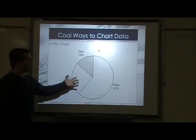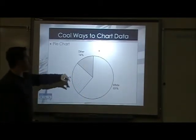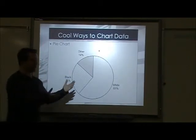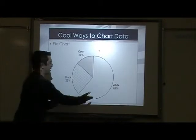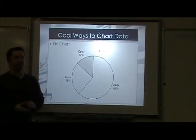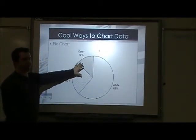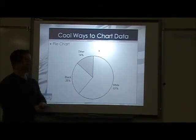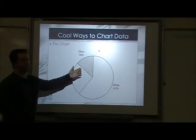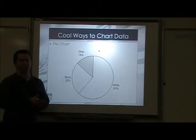Another one a lot of you have probably seen is a pie chart. A pie chart just breaks it out — 61% white, 25% black, 14% other, depending on what your data set is. It helps you look at, for example, your classroom grades: what percent of your students are getting A's, B's, C's, D's, and hopefully not very many F's. You can also look at ISAT scores — put them in groups: Proficient, Advanced, Basic, Below Basic — and see what percentage of your students fall in each.